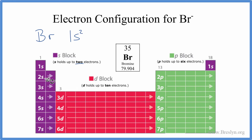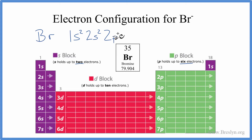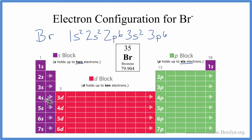We go to 2s², and we've used 4 electrons. Then 2p — p can hold up to 6 — so we'll put 2p⁶, then 3s², 3p⁶, and 4s². So far we've used 20 electrons.